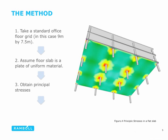The method is to take a standard office floor grid — in this case 9 by 7.5 metres — and assume the floor slab is a plate of uniform material. We then obtain the principal stresses from our FE analysis, and you can see on the right the principal stresses in the 9 by 7.5 flat slab.